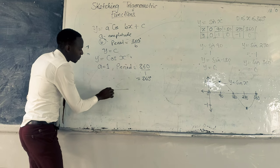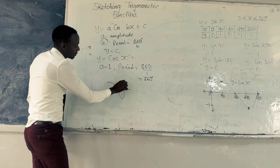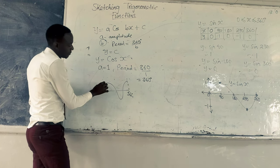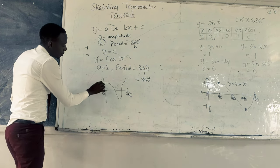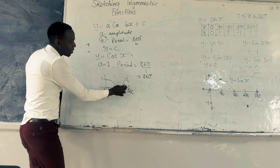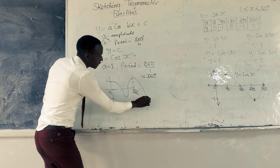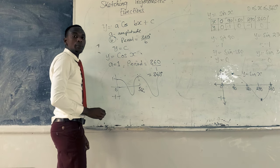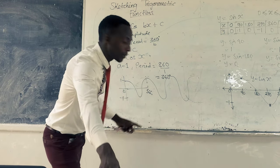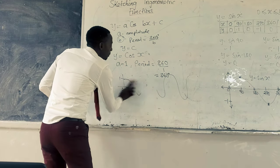So let's say, for example, if the function was like this, it means that here there is a period of 360 degrees. So every after 360 degrees, this function will be repeating itself. Again, after 360 degrees, it will be repeating itself. So that's what the period is like.